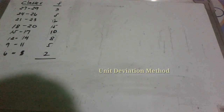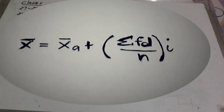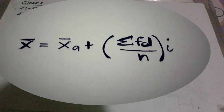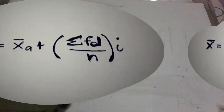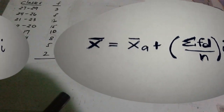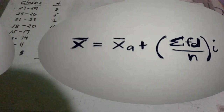Our next method in finding the mean for grouped data is what we call the unit deviation method. Use the formula: mean or x-bar is equal to x sub-a plus the quantity summation of FD all over N, times i. Where x sub-a is the assumed mean — that is the midpoint of the class claimed as origin and assigned with zero deviation. F is the absolute frequency per class, D is the class deviation by unit, N is the total number of values, and i is the interval size.